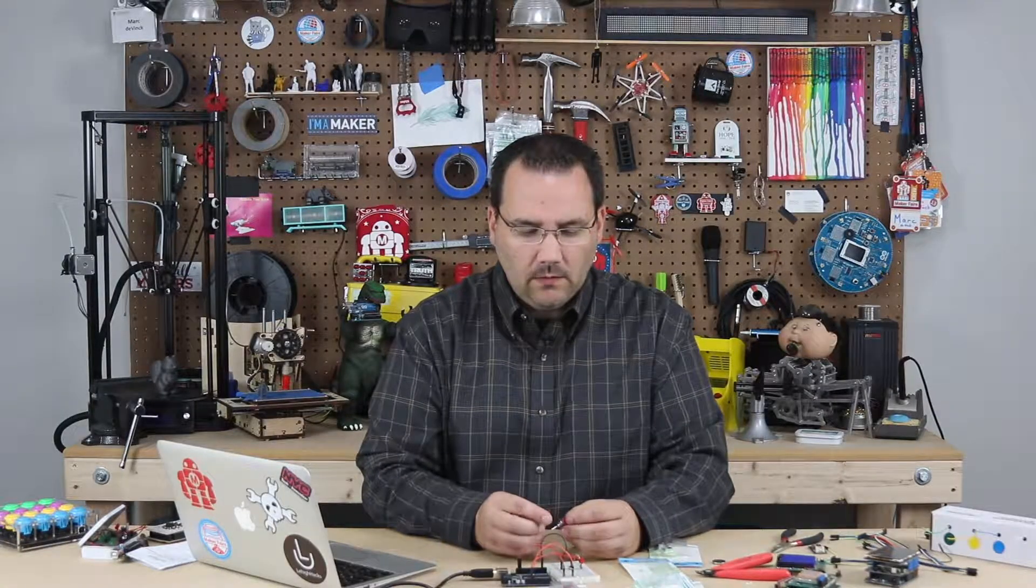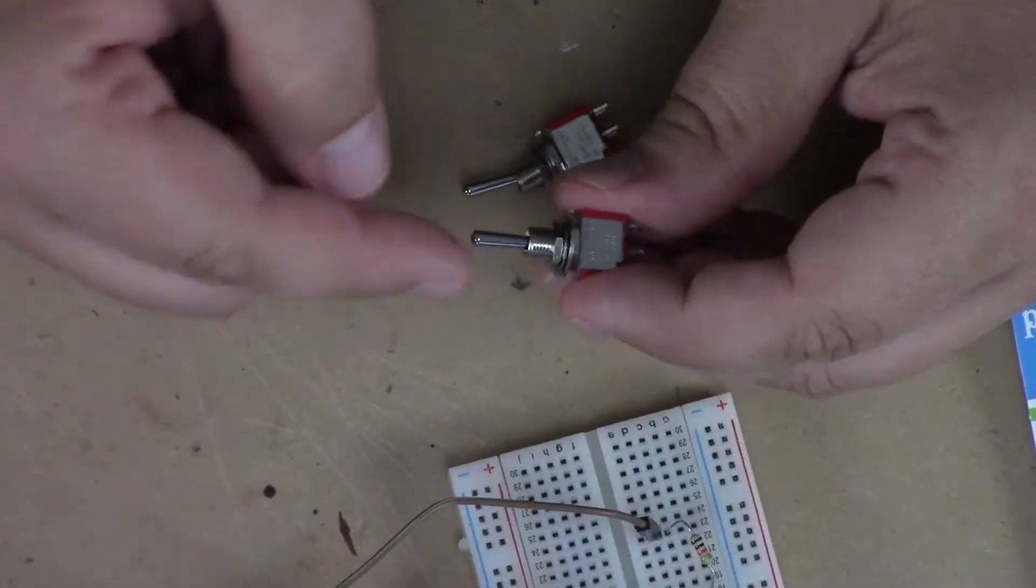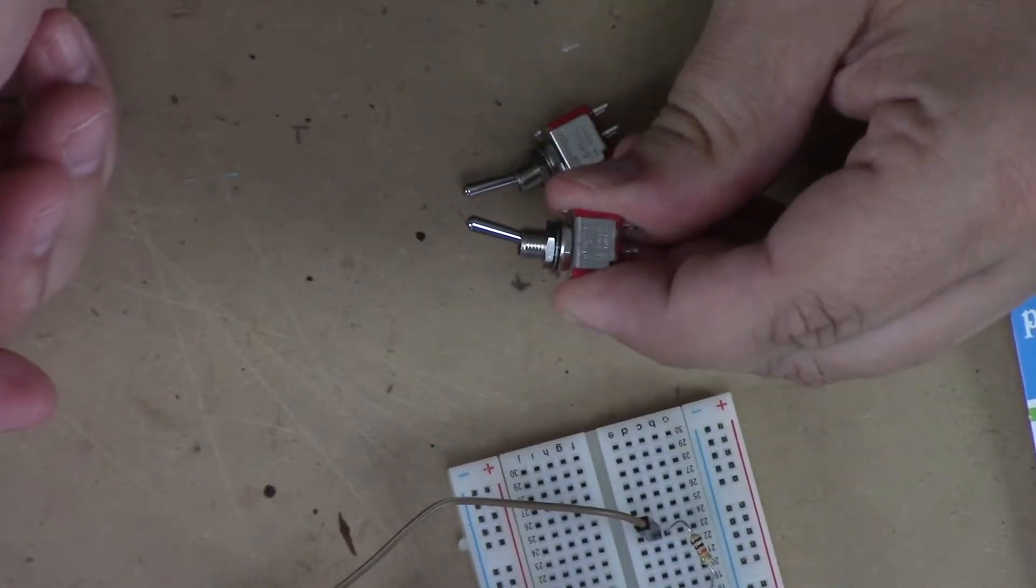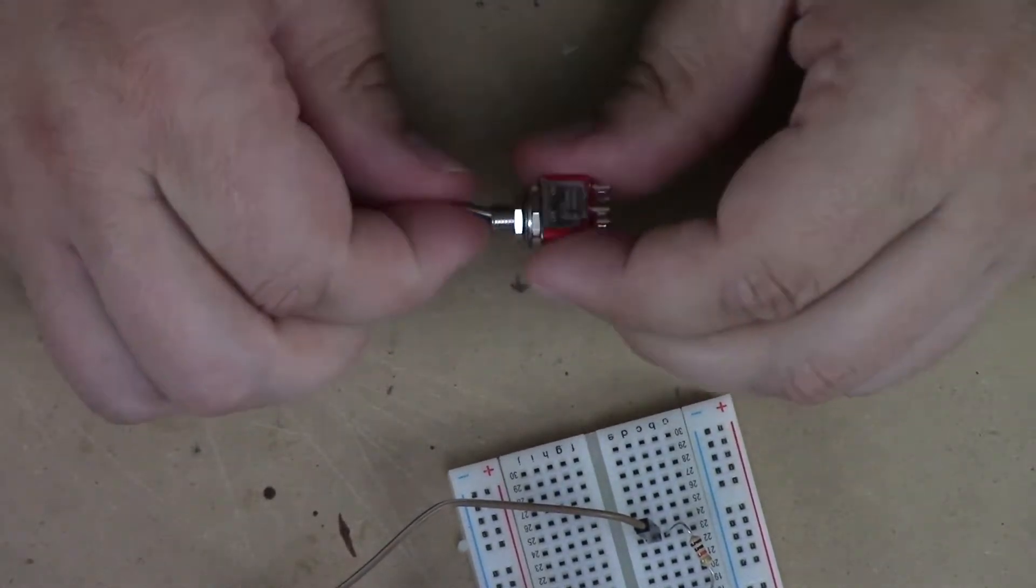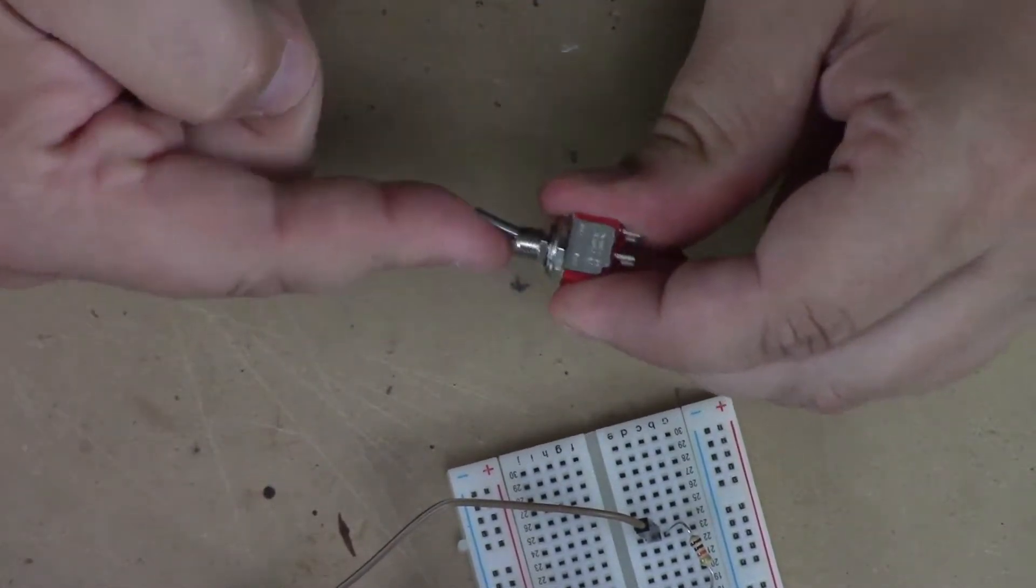Now the dual throw, this one means I can throw the switch one way and I can throw the switch the other way, as opposed to this one is a single throw, on, off.